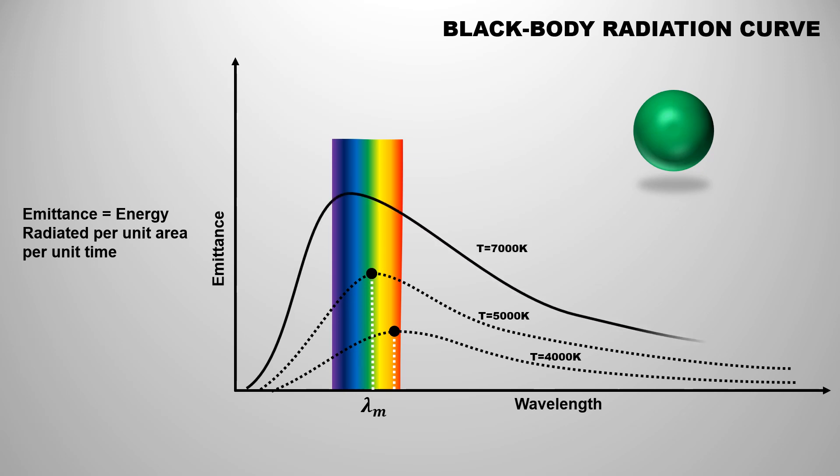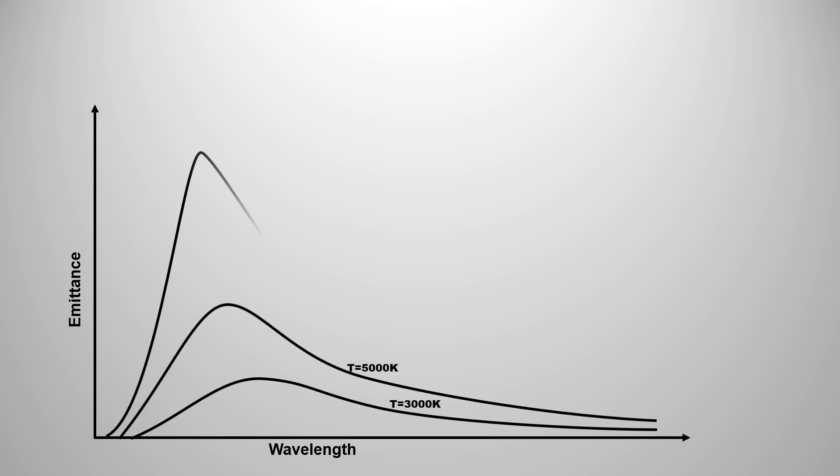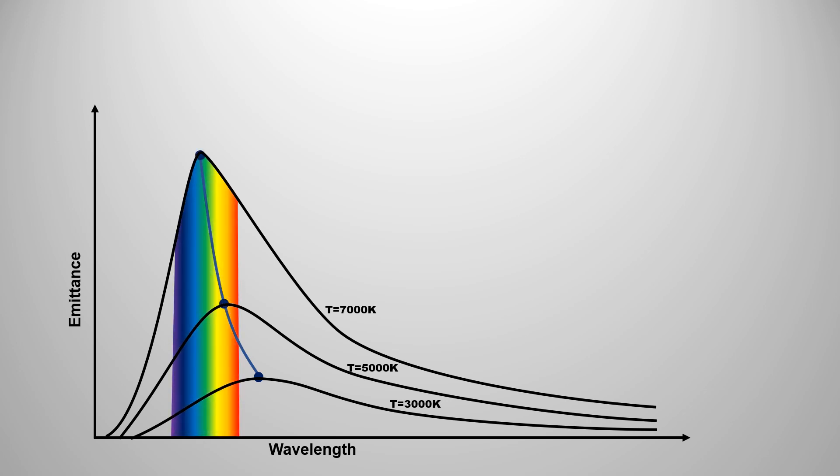Now if the temperature is increased further to 7000K, in the radiation curve, the dominating wavelength displaces more toward the shorter wavelength. Due to this, the color of the blackbody changes to blue. William Wien explained this phenomenon as an extension of classical mechanics, that as the temperature of the blackbody increases, the dominating wavelength of radiated radiation displaces toward the shorter wavelength. This is called Wien's displacement law.